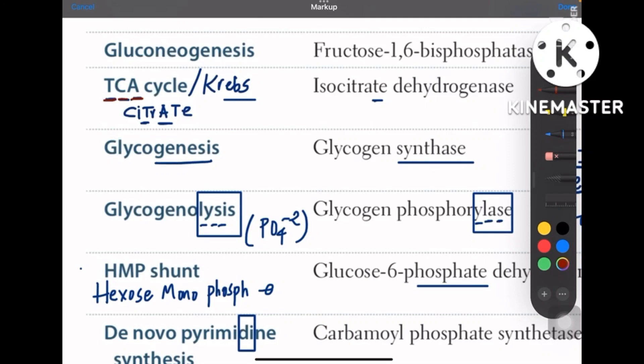TCA cycle is isocitrate dehydrogenase, which is otherwise called Krebs cycle.